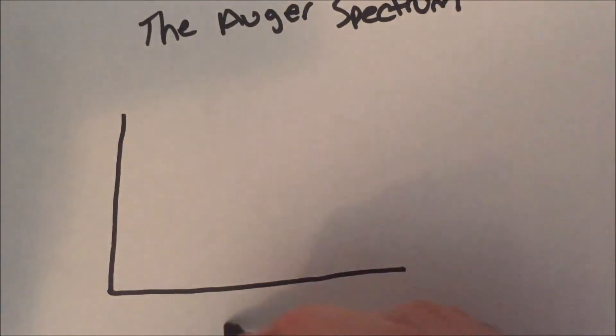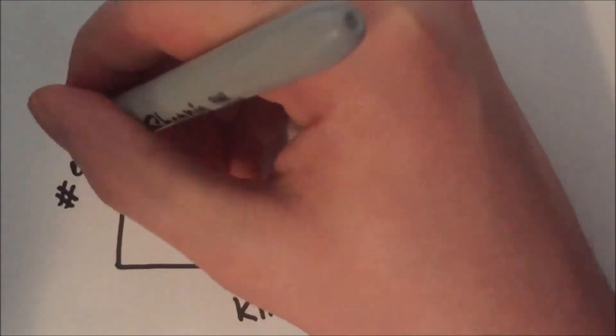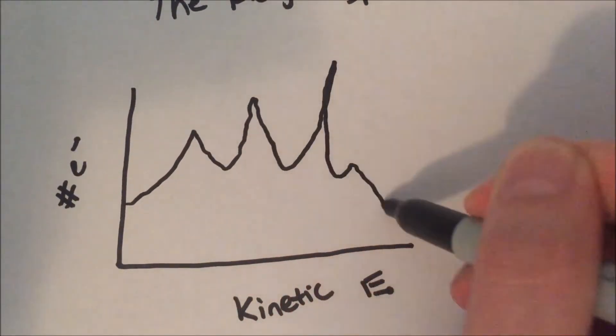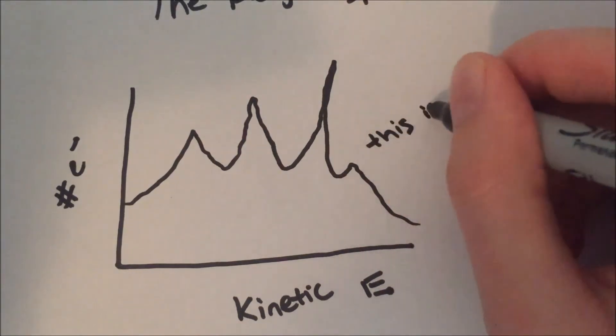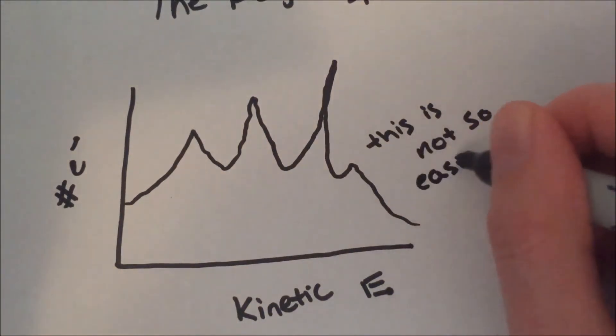The spectrum of Auger electron energies from an element is typically plotted as a function of kinetic energy. This type of plot is not very revealing of the signature of the element in question, as the peaks are relatively broad and hard to analyze.